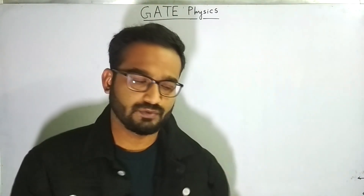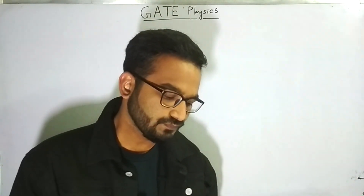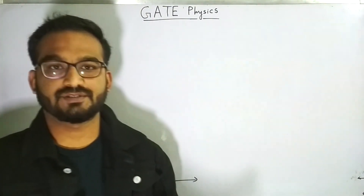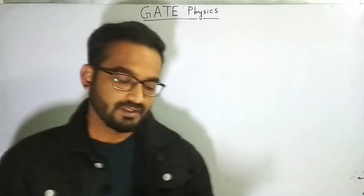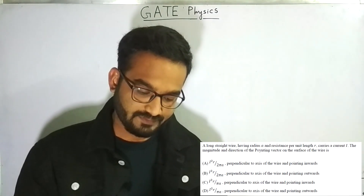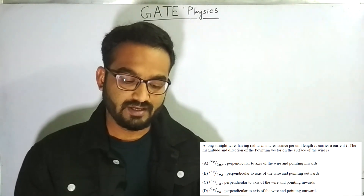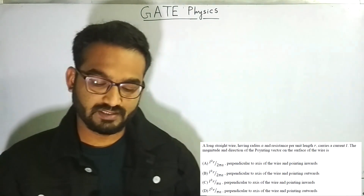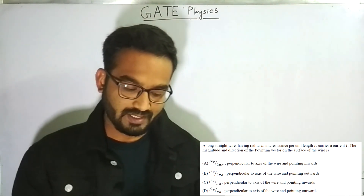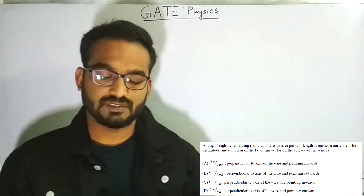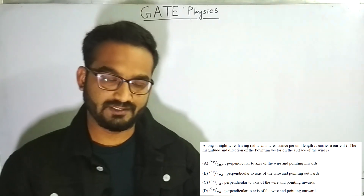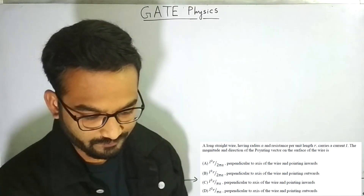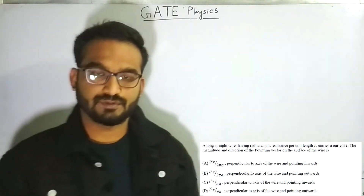The first problem of today is from electromagnetic theory. The question reads: a long straight wire having radius a and resistance per unit length r carries a current i. The magnitude and direction of the Poynting vector on the surface of the wire is to be found. You are given four options.